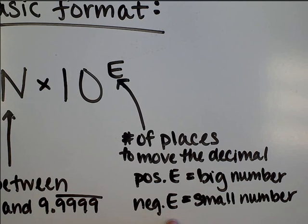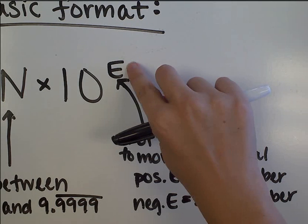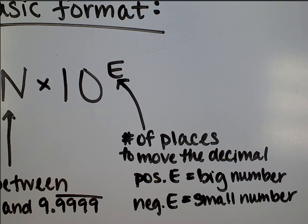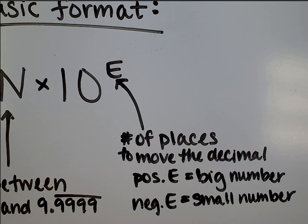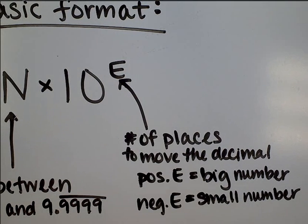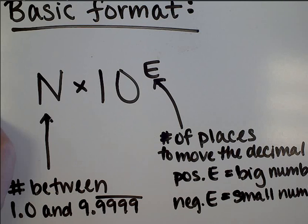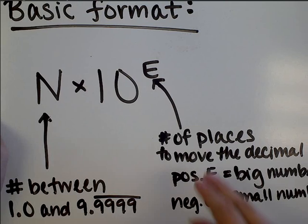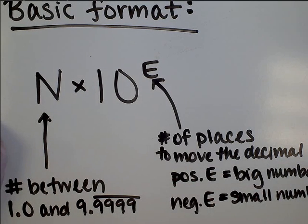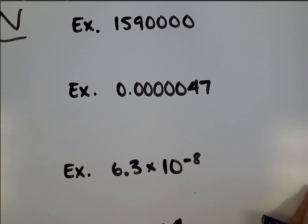Whereas if we have a negative number here for our exponent, that tells us that this whole thing is an itty-bitty number like 0.00000001, something like that. So that is the basic idea here. What we're doing is moving the decimal point over until we end up with a number between 1 and 9.9999. And then the exponent just tells us how many places we had to move the decimal over. So let's look at some examples to help us out.